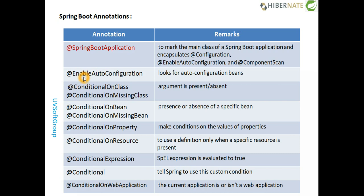From Spring Boot you can see @EnableAutoConfiguration, and then you have @ConditionalOnClass, @ConditionalOnMissingClass to check if a class is present or absent. You can also use @ConditionalOnBean or @ConditionalOnMissingBean to check for the presence or absence of a specific bean, and @ConditionalOnProperty to make conditions on the value of a property.